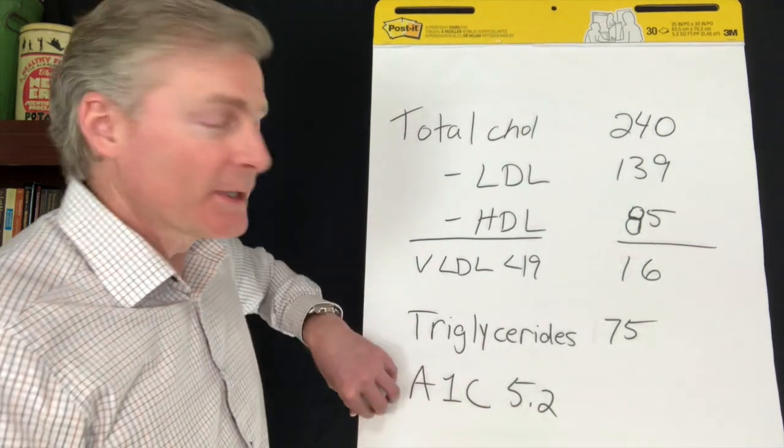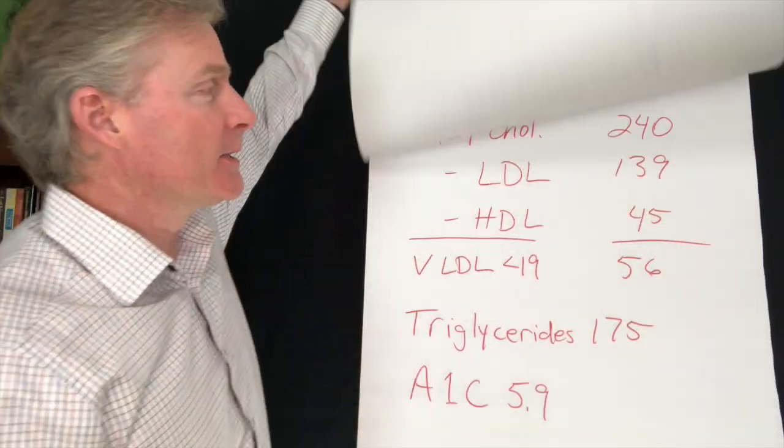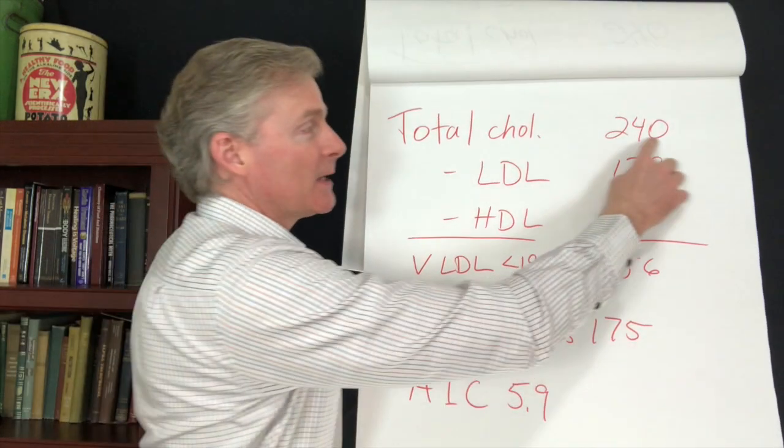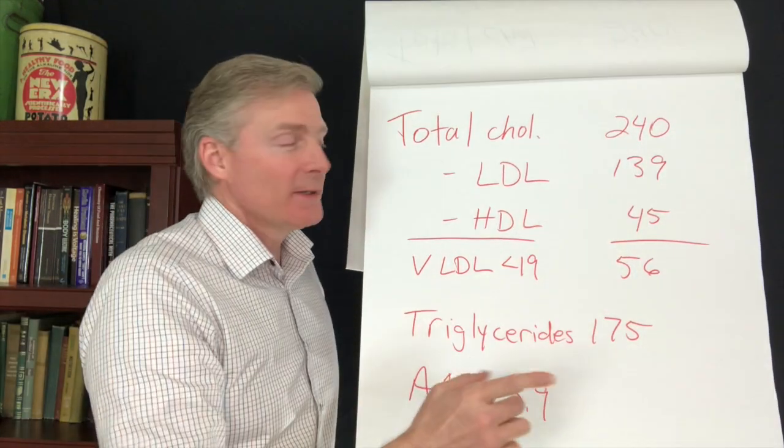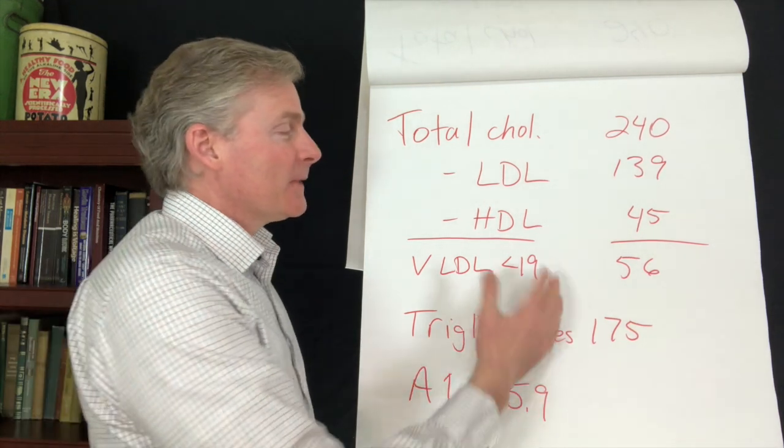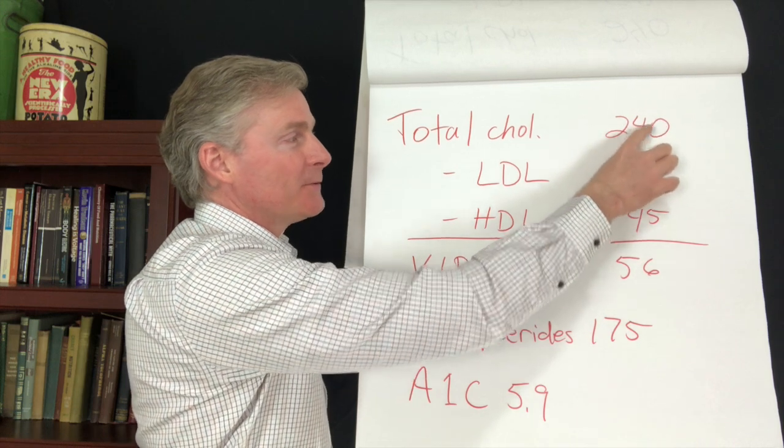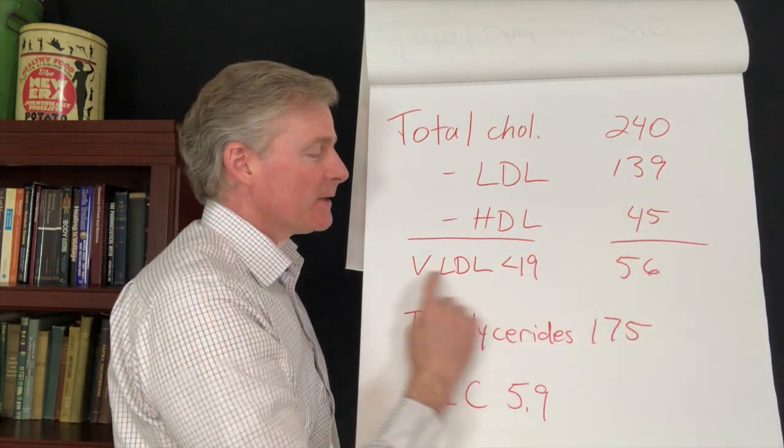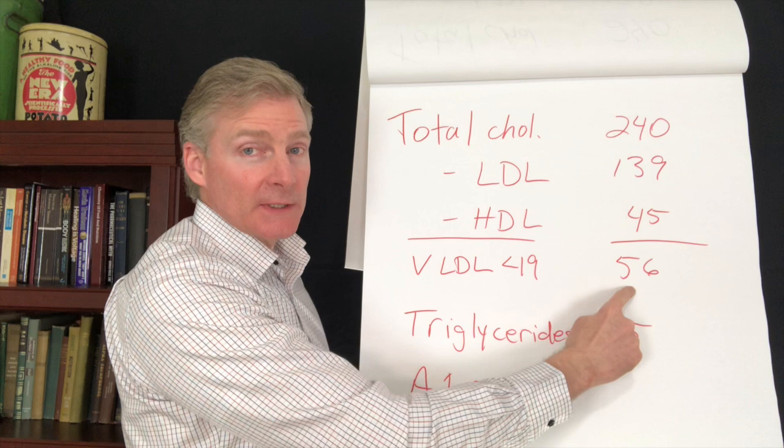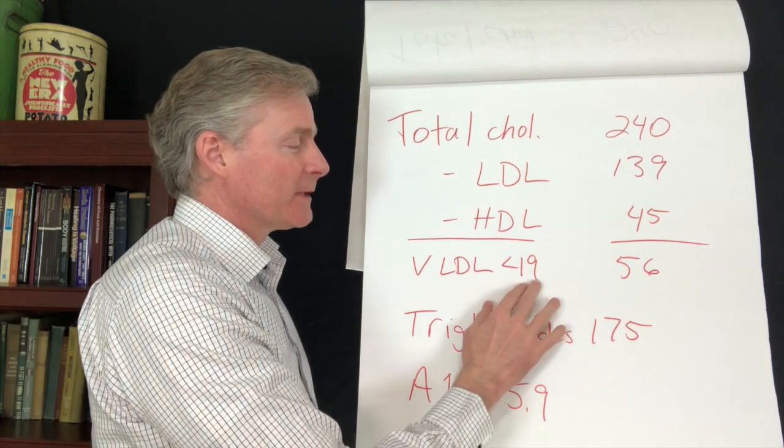Now let me show you the next scenario. Now remember, this is 240 and this is 139. This other scenario, I put it in red ink, same numbers. But they're eating a high-carb diet and they're eating too much sugar. And their HDL is only 45. So when you do the math, 240 minus 139 minus 45, their VLDL is 56. That's screaming high. It's too high. And it should be less than 19.